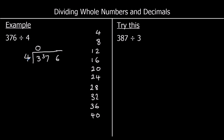Now we ask how many 4s go into 37. We can see from our 4 times table that 9×4 makes 36, so 9 fours go into 37 with 1 left over. That 1 goes into the ones column and makes 16. How many 4s go into 16? That's 4. So the answer is 376 divided by 4 equals 94.